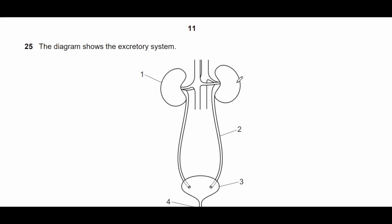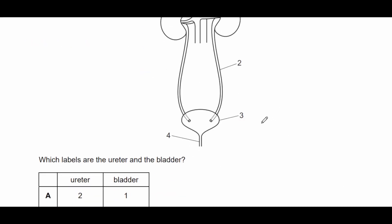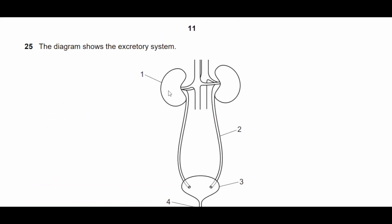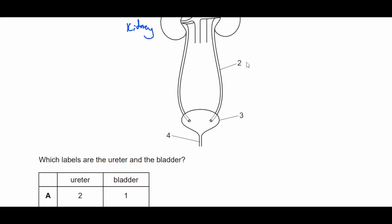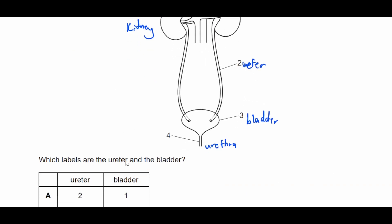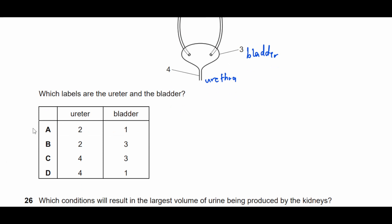Question twenty-five: the diagram shows the excretory system. Which labels are the ureter and the bladder? Number one is the kidney, number two is the ureter, number three is the bladder, and number four is the urethra. A person has two ureters but one urethra. The ureter and bladder are two and three, so the answer is B.